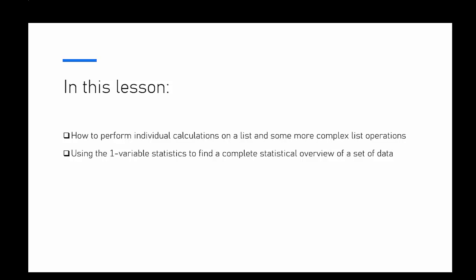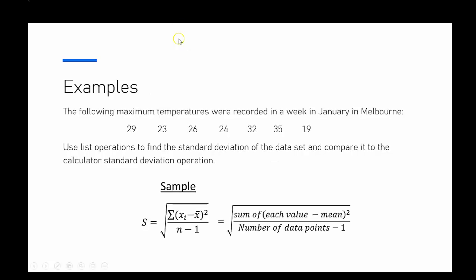Here we've got our example — we're just going to look at seven data points. They're the maximum temperatures recorded in a week in January in Melbourne. We're going to use those data points to find the standard deviation of this set of data, and then compare it to just using the standard deviation function on the calculator.